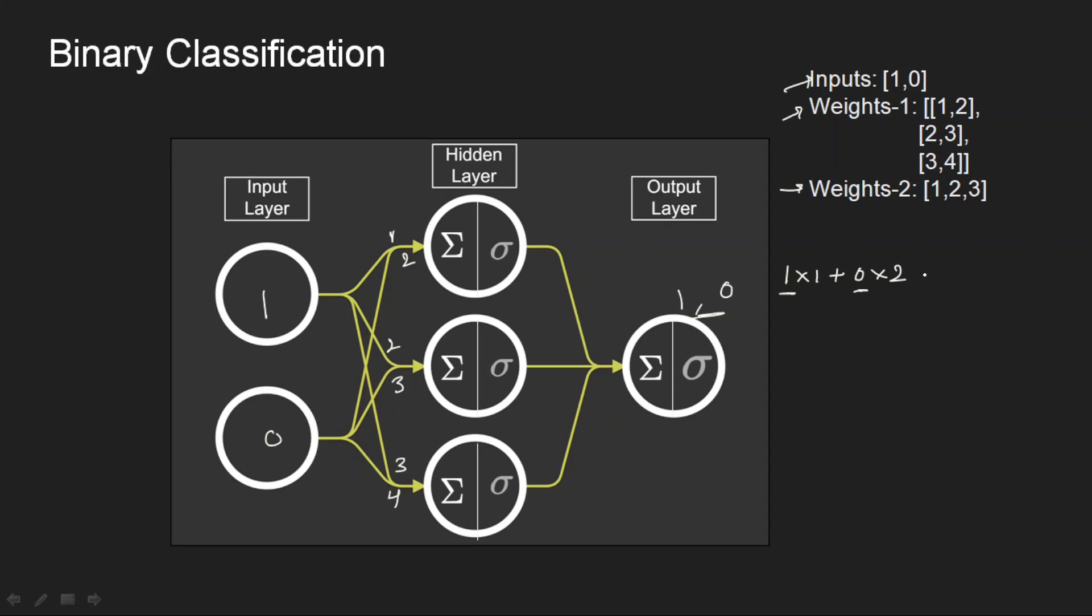So this is for the first neuron. My 1 and 0 are the inputs coming and 1 and 2 are the weights. So this will be 1. And then for the second neuron it is actually 1 into 2 plus 0 into 3, so that is 2. And for the third neuron it is 1 into 3 plus 0 into 4, so that is 3. So my weighted sums are actually 1, 2, and 3.